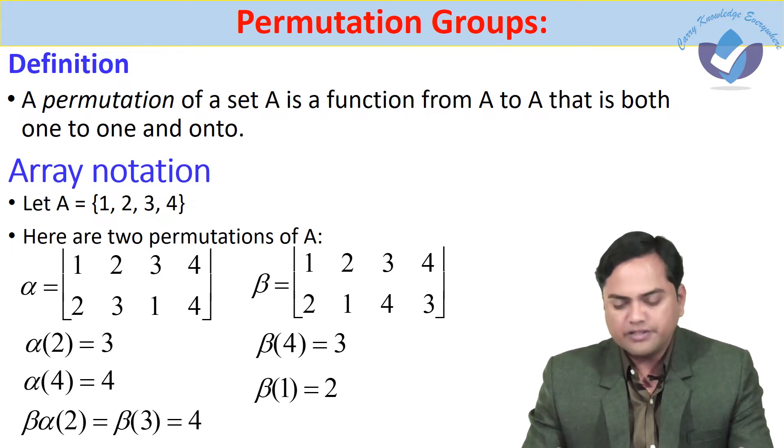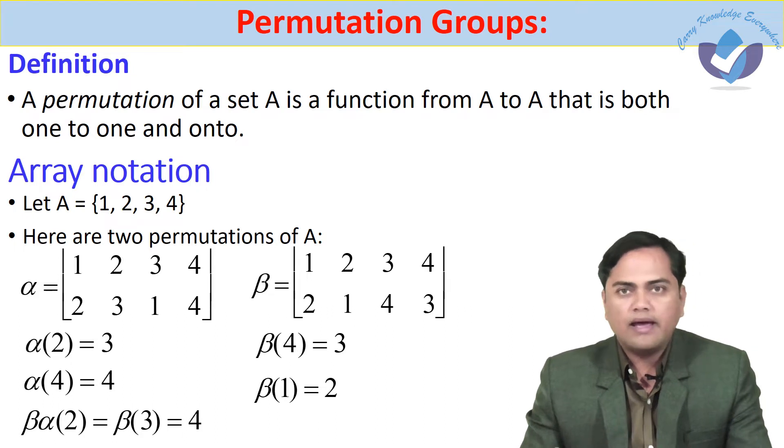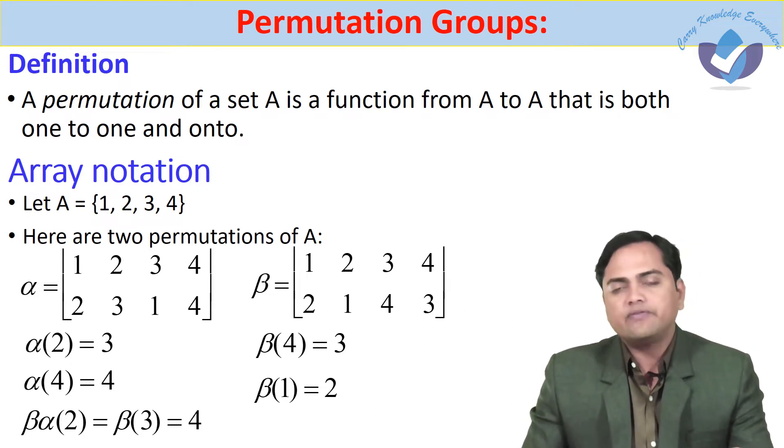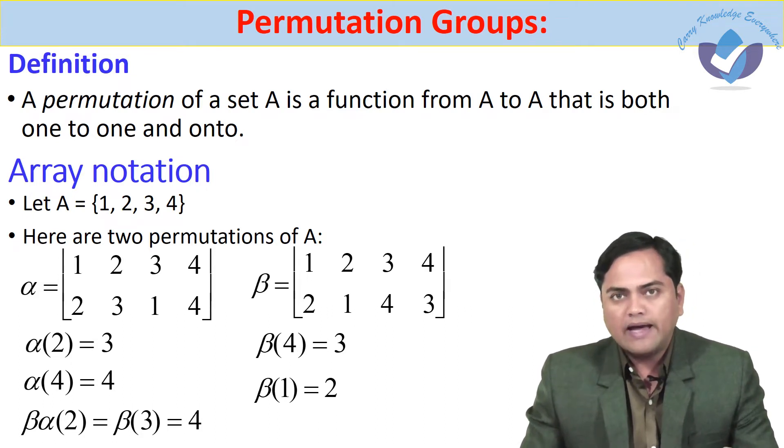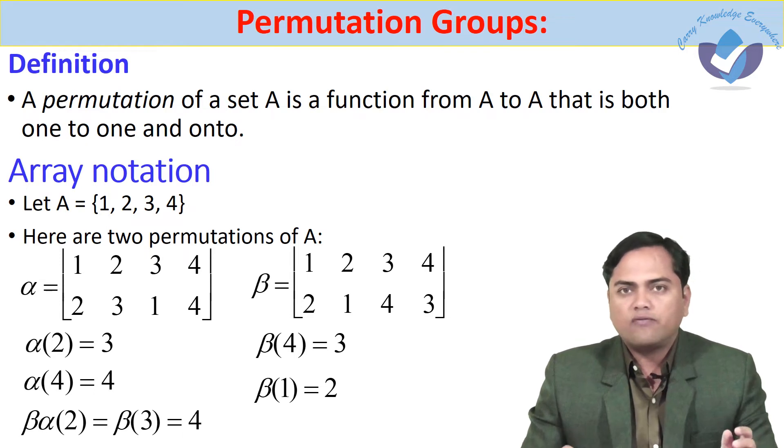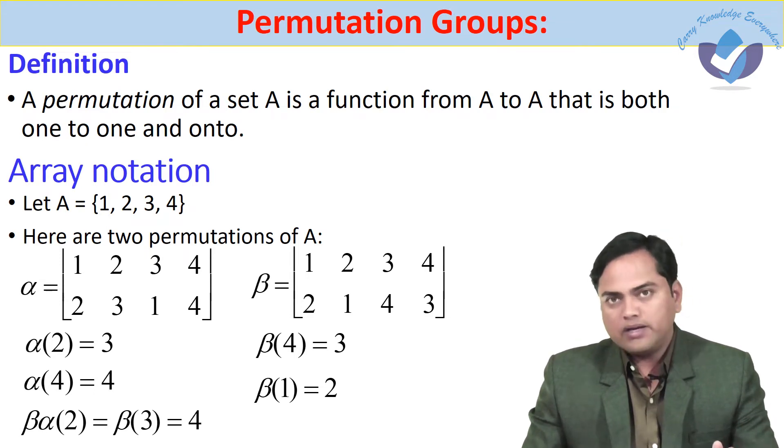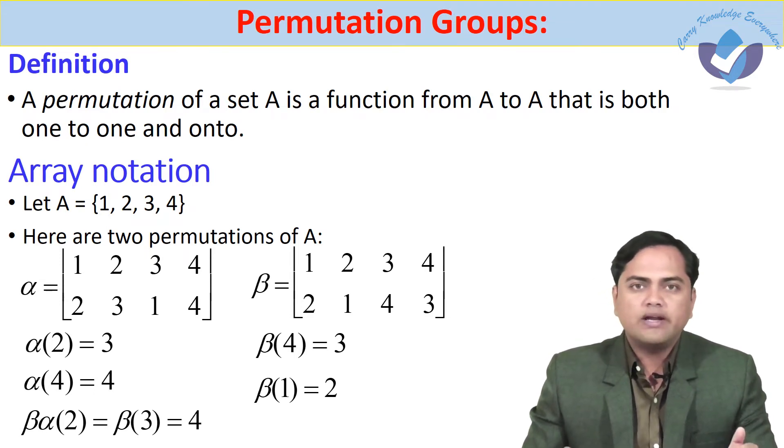A permutation of a set A is a function from A to A that is both one-to-one and onto. In this case, we define permutation as a function from A to A that is both one-to-one as well as onto.